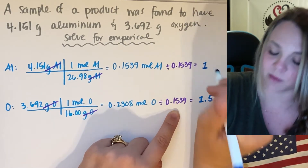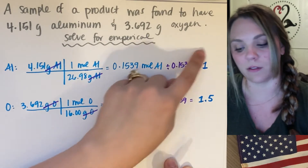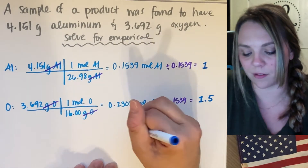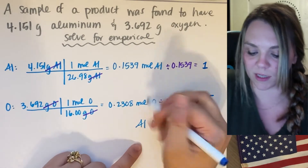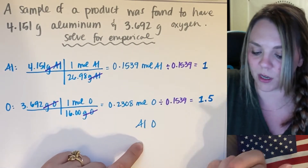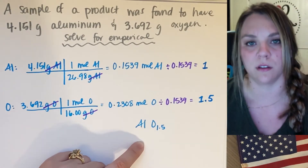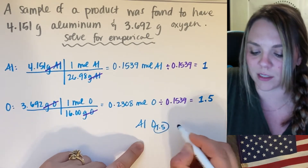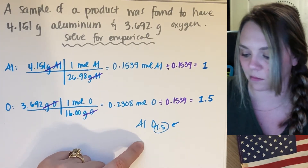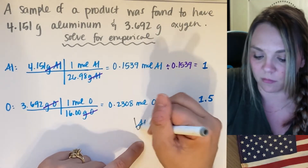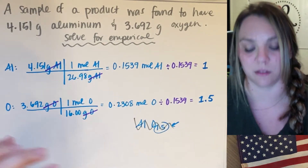This is a problem because if I had this, I would have a formula like Al₁O₁.₅ — and that doesn't exist. What is 1.5 of an oxygen atom? No one knows because it's not real.